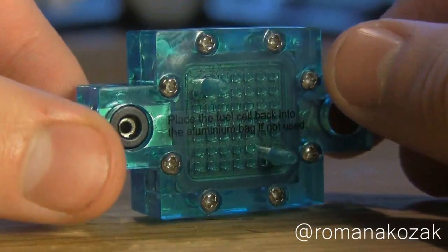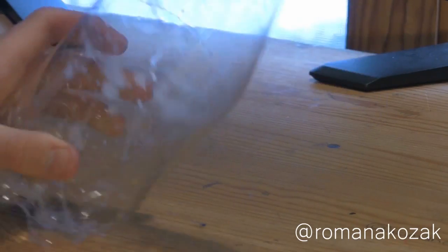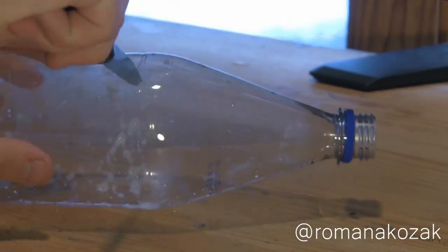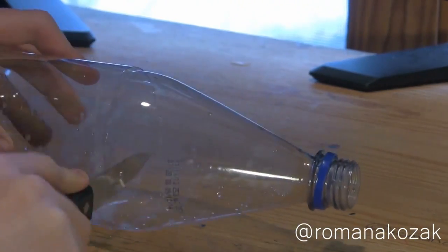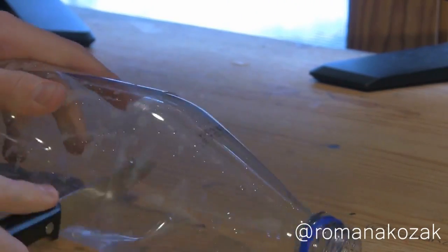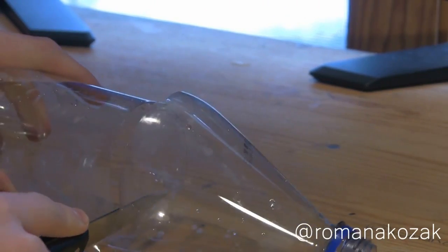To start generating electricity you will need a water bottle. If you're a little kid make sure you get adult help so you don't cut yourself. Just cut off the top of the water bottle.